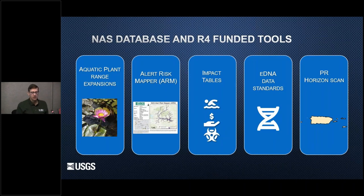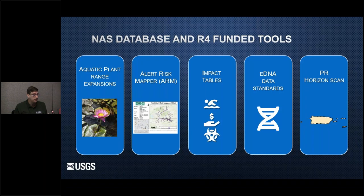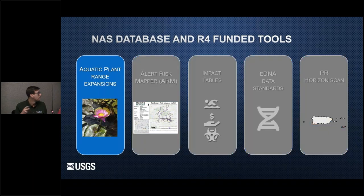The projects I'm going to talk about today — we'll cover five: aquatic plant range expansions, the Alert Risk Mapper, our impact tables, our eDNA data standards and integration, and the Puerto Rico horizon scan. We'll start off with the aquatic plant range expansions.